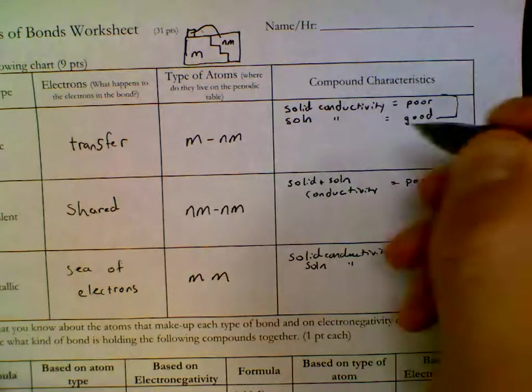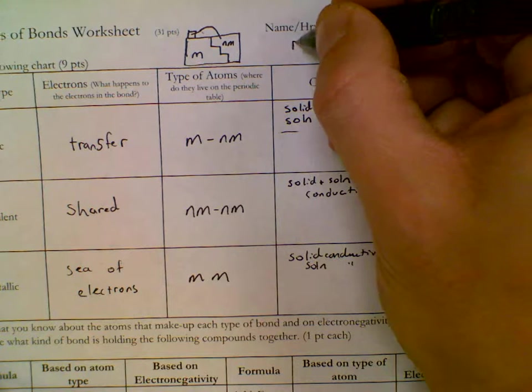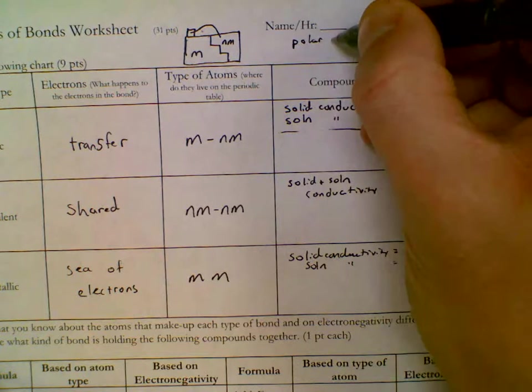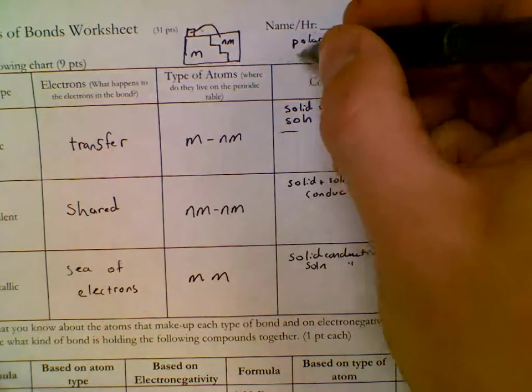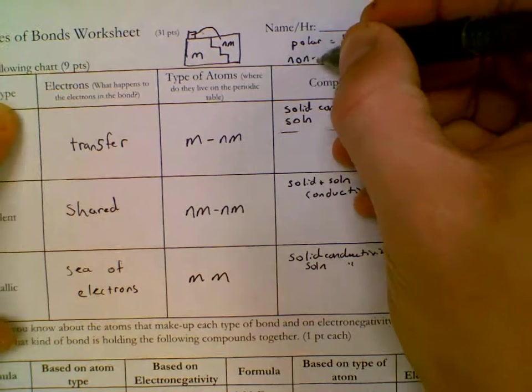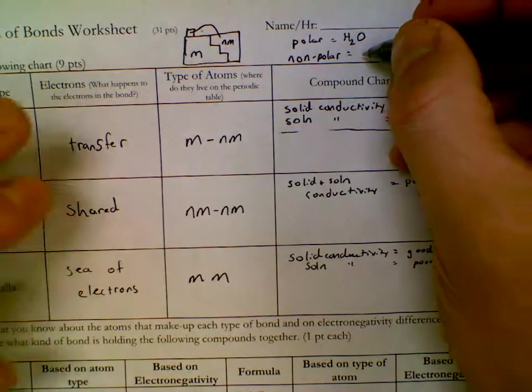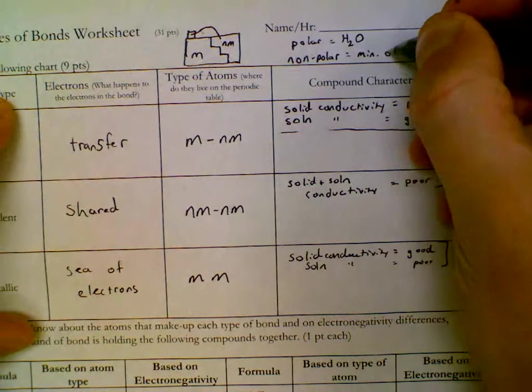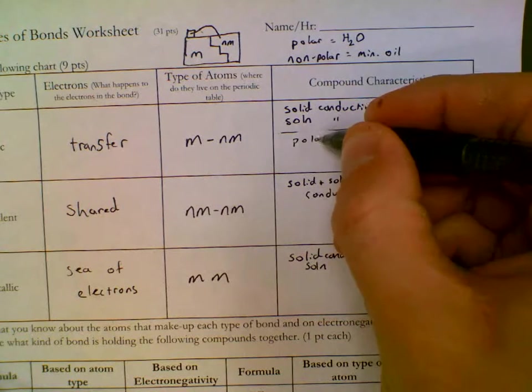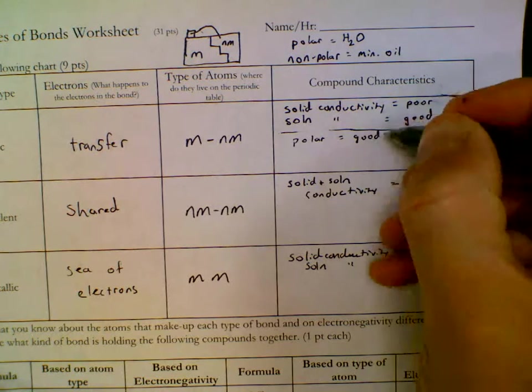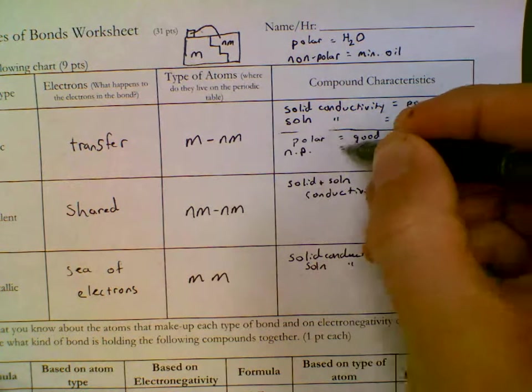As far as solubility goes, we're going to talk about both polar, so it dissolves in water, would be a great example of a polar liquid. Or nonpolar can dissolve in a nonpolar liquid. This would be something like mineral oil. So for ionic, polar equals good. And if you're going to be soluble in one, you're really not going to be very soluble in the other. We'll call it NP is poor.